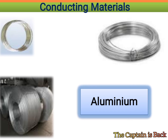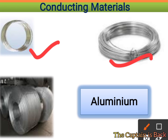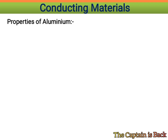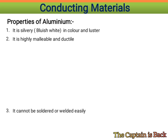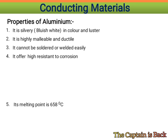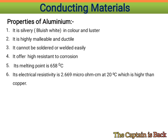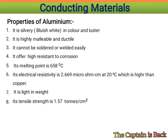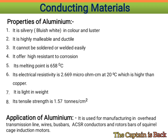Aluminium is silvery bluish-white in color with lustre. It is highly malleable and ductile but cannot be soldered or welded easily. It offers high resistance to corrosion. Its melting point is 658°C and electrical resistivity is 2.669 micro-ohm-centimeter at 20°C, which is higher than copper. It is light in weight with tensile stress of 1.5 tons per cm². Applications include overhead transmission line wire, bus bars, ACSR conductors, and rotor bars of squirrel cage induction motors.